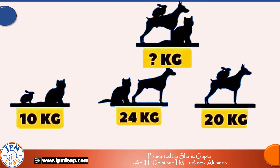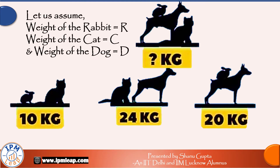Let us assume that the weight of the rabbit is equal to R, weight of the cat is equal to C, and weight of the dog is equal to D. There are three conditions given in the pictures of this question, which will help us form our equations.